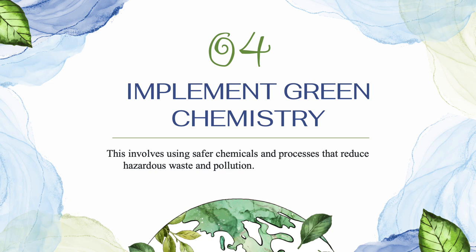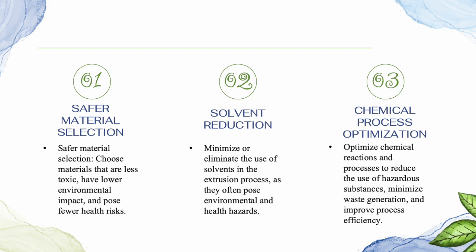Implement green chemistry. This involves using safer chemicals and processes that reduce hazardous waste and pollution. How to implement green chemistry: First, by using safer material selection. Choose materials that are less toxic, have lower environmental impact, and pose fewer health risks. This includes opting for bio-based or renewable materials, as well as selecting substances with lower hazardous characteristics. Next, by solvent reduction, which minimizes or eliminates the use of solvents in the extrusion process, as they often pose environmental and health hazards. Look for alternative solvent-free processes and water-based formulations.